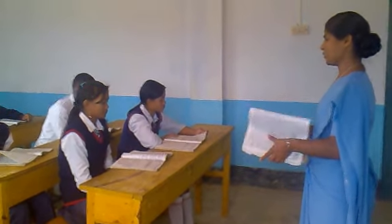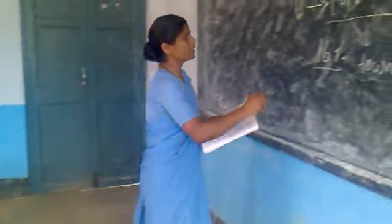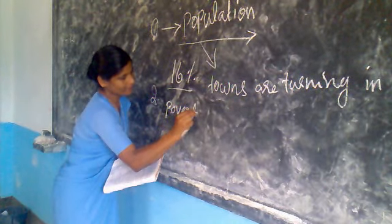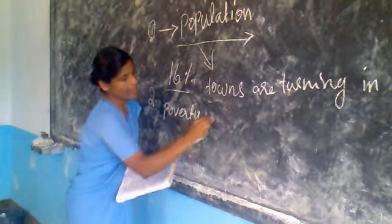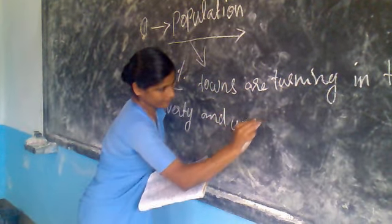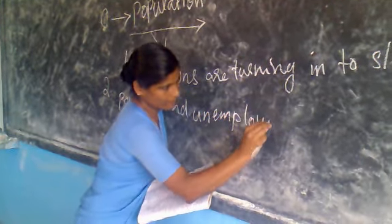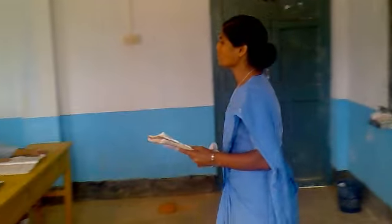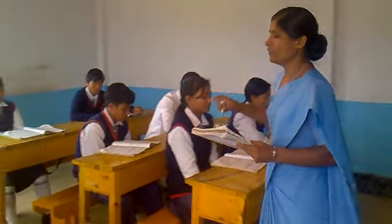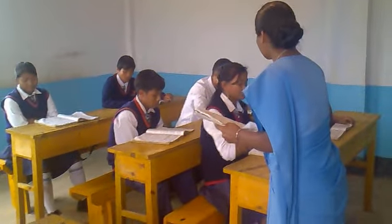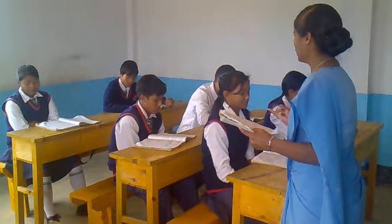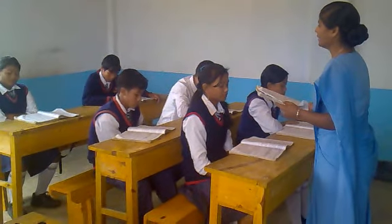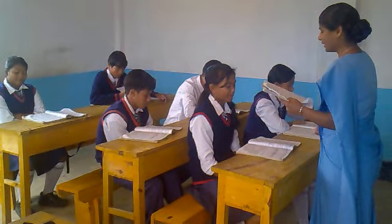The second challenge faced by Indian democracy is poverty and unemployment. When population increases, people do not have access to basic needs. The basic needs are food, shelter, and other necessities.